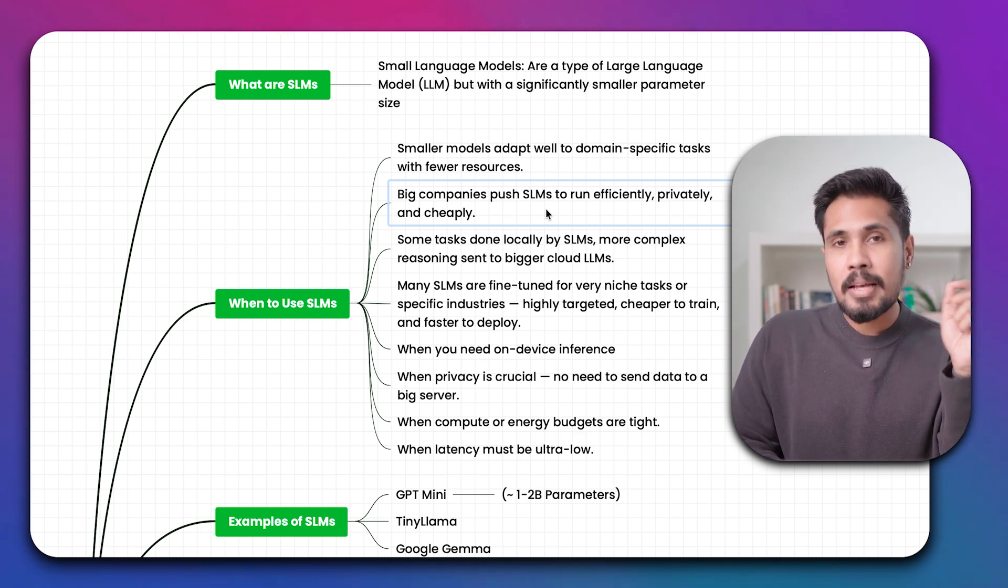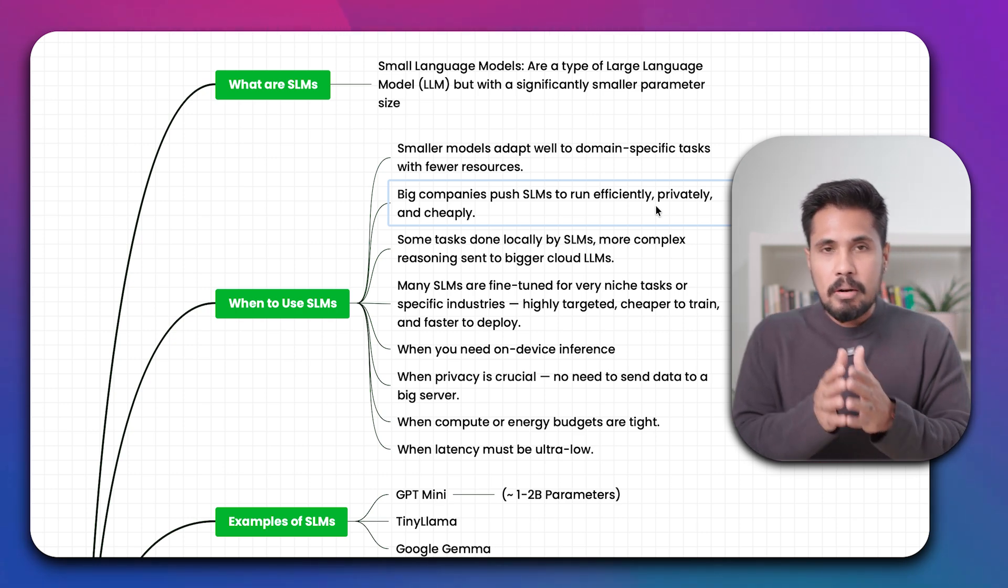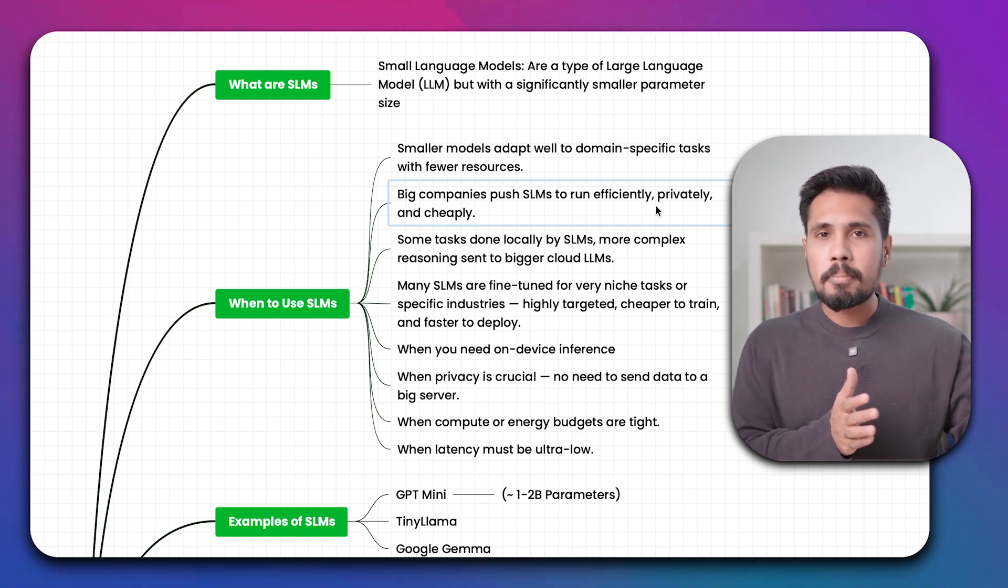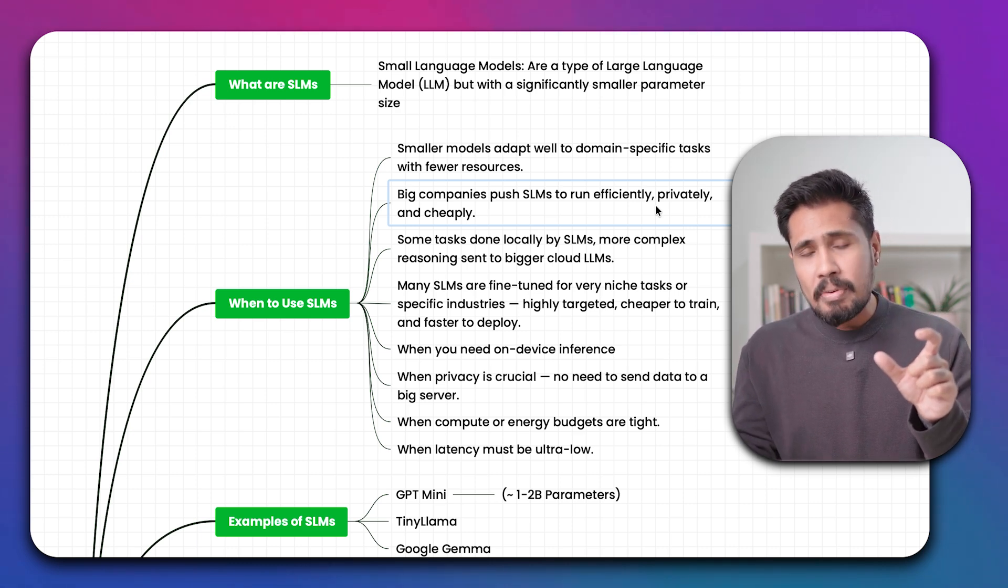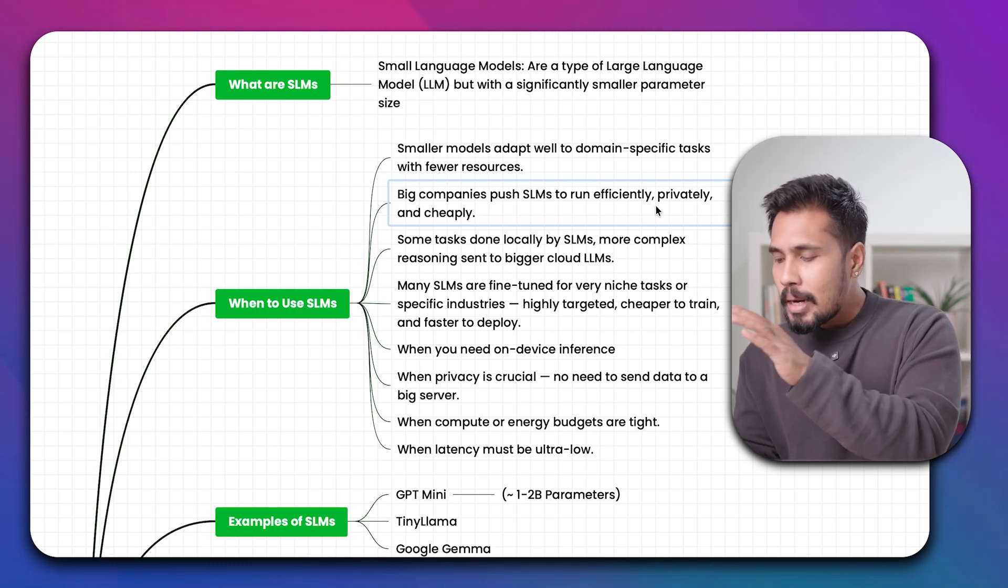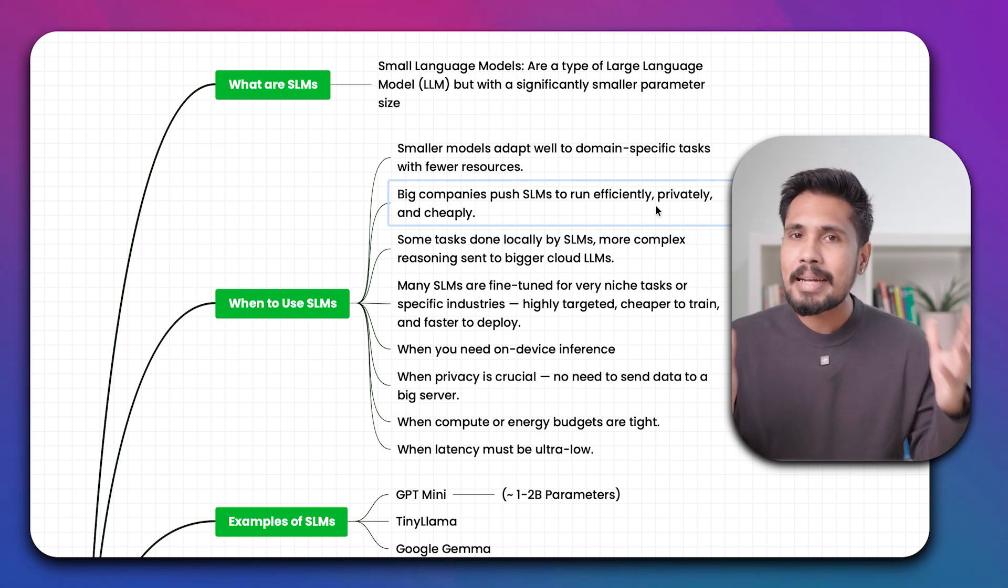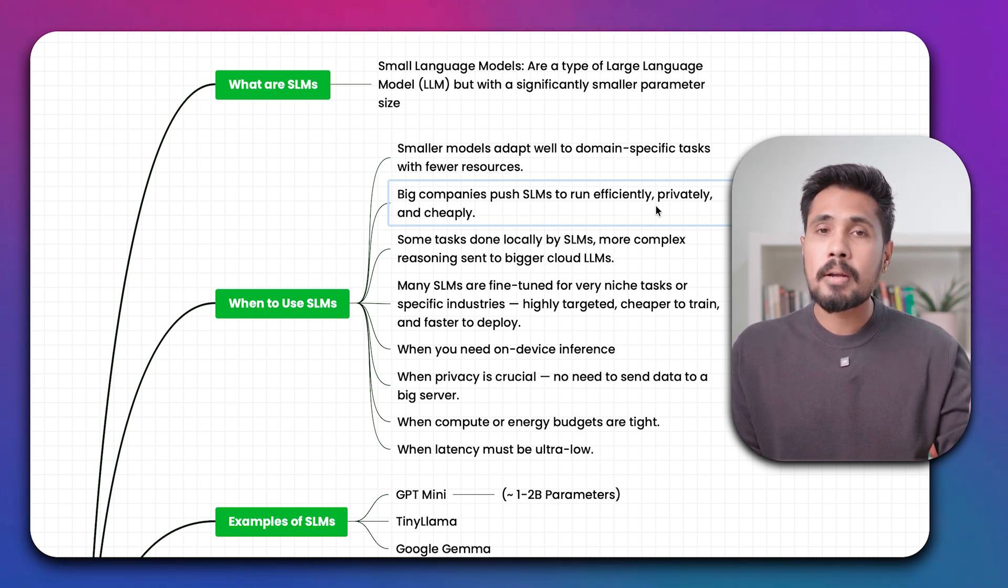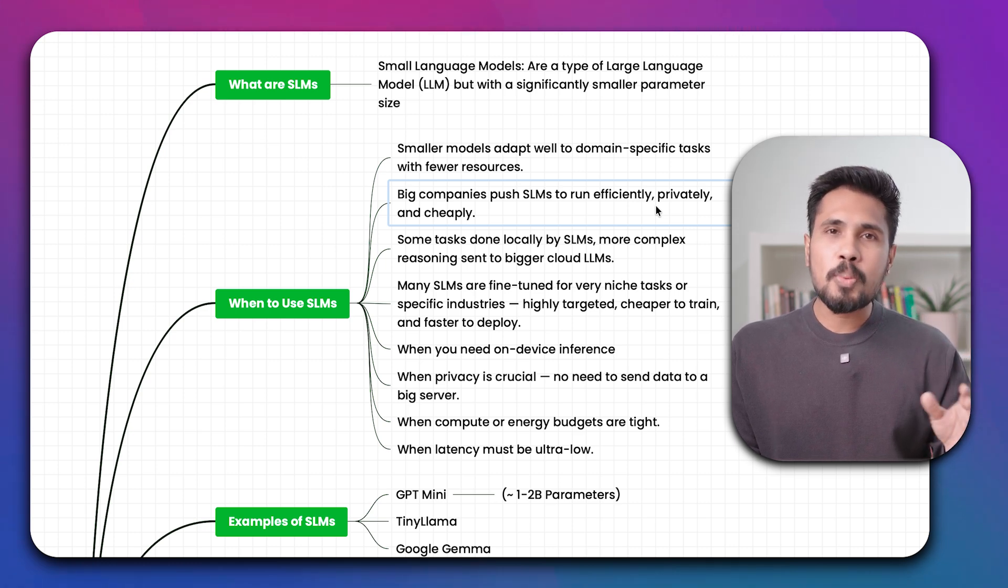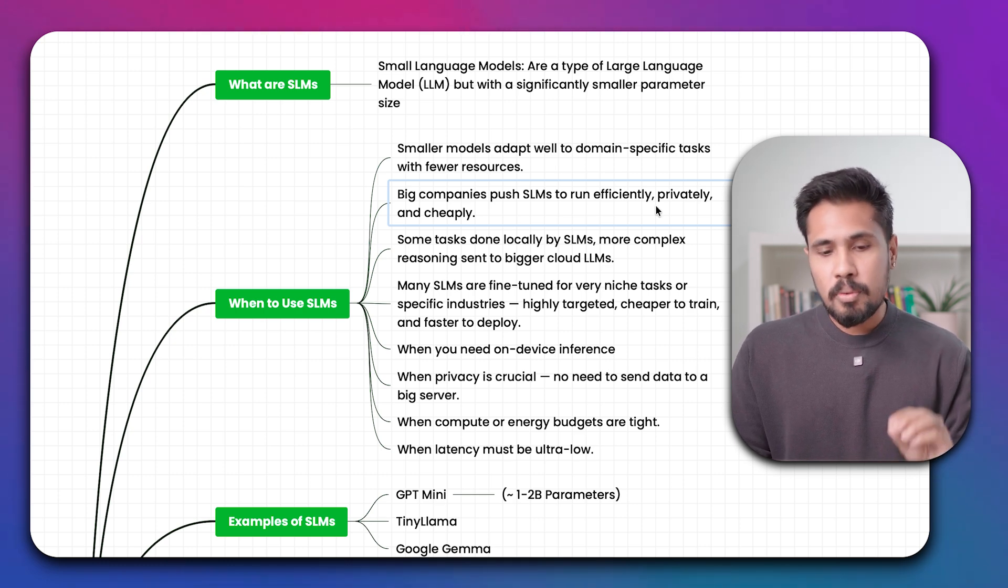Big companies are pushing SLMs to run efficiently, privately, and cheaply. Now you are trying to leverage ChatGPT, accessing with an API key and you have very sensitive data of various clients. This data is going to be recalled by your LLM model, but we never know. Even though we say the data is not consumed by ChatGPT or OpenAI, companies are going to have the doubt. If you want to overcome that situation, I want my data to be private. You are able to develop SLM models.